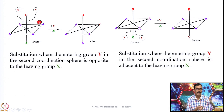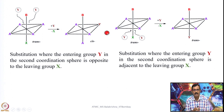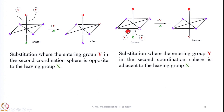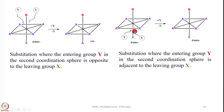So the trans compound gives a cis compound if the entering group is on the opposite side of the leaving group. On the other hand, if the entering ligand Y in the second coordination sphere is in the same or nearby position as the leaving group, there is no net change in geometry and a trans compound gives a trans compound. In summary: entering group Y opposite to leaving group gives cis; entering group Y adjacent to leaving group gives trans.